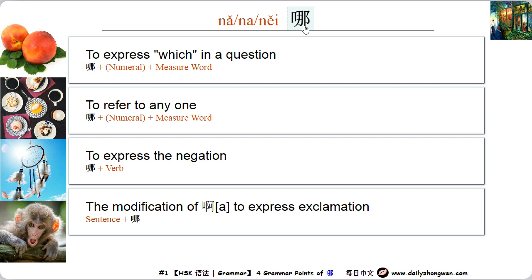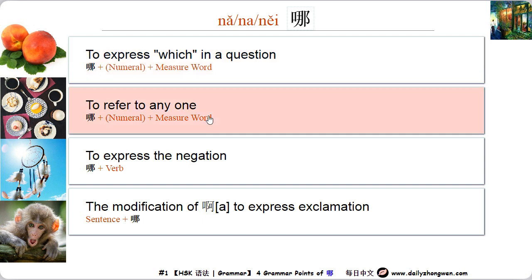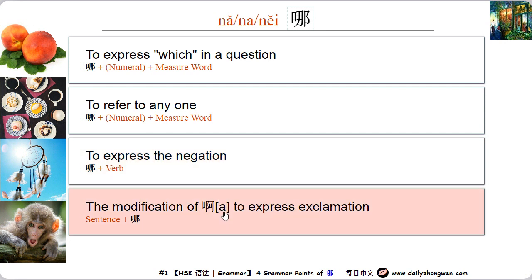Hi everyone. In this video, I'm going to show you how to use the character 哪 (na). There are four ways to use 哪: to express 'which' in a question, to refer to 'anyone', to express negation, and to express exclamation just like 啊. Let's learn them in sentences.